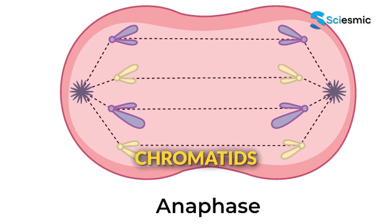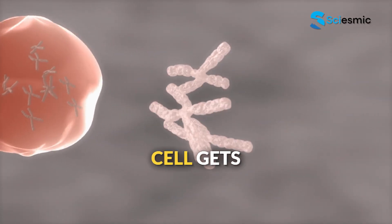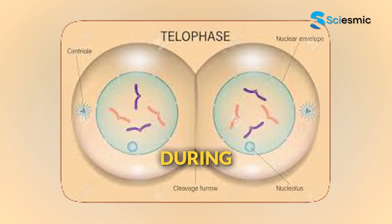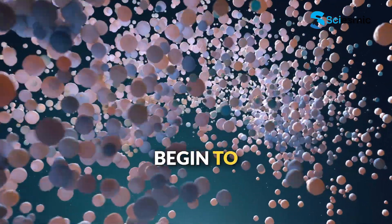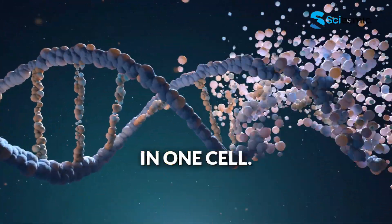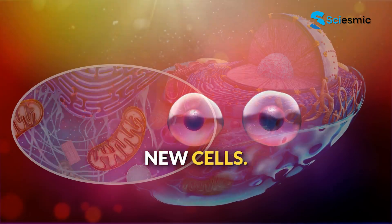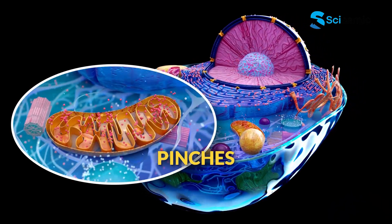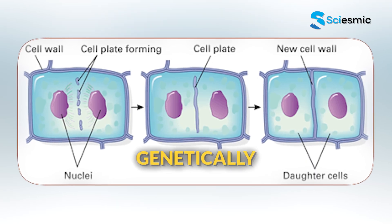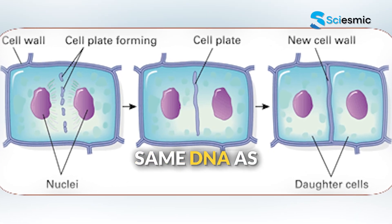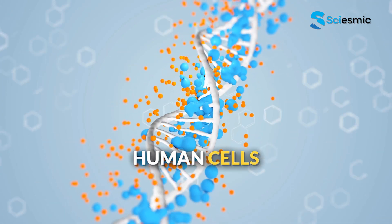Then, anaphase — the sister chromatids separate and move to opposite ends of the cell, pulled by the spindle fibers. This ensures that each new cell gets exactly the same genetic information. During telophase, nuclear envelopes reform around each set of chromosomes and the chromosomes begin to uncoil. We now have two nuclei in one cell. Finally, cytokinesis divides the cytoplasm and organelles between the two new cells. In animal cells, the cell membrane pinches inward; in plant cells, a new cell wall forms right down the middle. The result: two genetically identical daughter cells, each with the same DNA as the original parent cell. The entire process takes about one to two hours in most human cells.